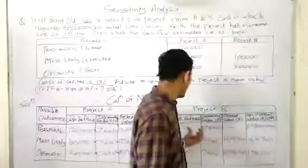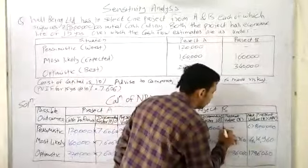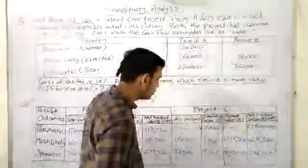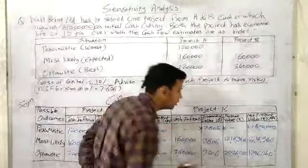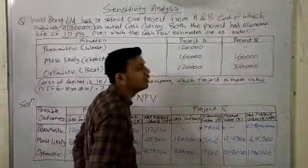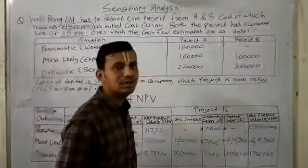As we don't have cash inflow for pessimistic approach, our answer is zero. For most likely, we have cash inflow of 1,60,000 multiplied by present value factor 7.606 equals 12,16,960.